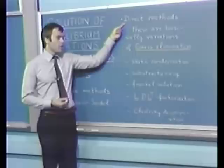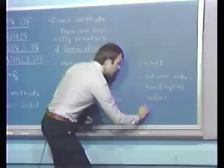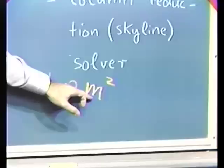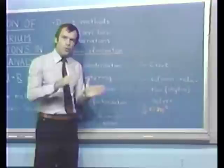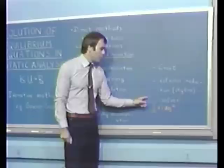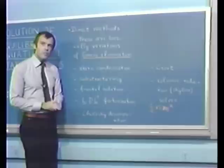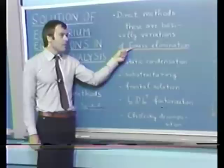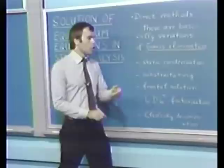The number of operations for a system with n equations and a half-bandwidth m is ½nm², where we use a half-bandwidth m that is constant for the system. If the bandwidth varies, some adjustments have to be made using a mean value. The important point is that we can actually count the number of operations to obtain the solution, which was not the case in the iterative method. In this lecture, I will briefly review how the basic Gauss elimination is performed, show how it is the basis of static condensation and substructuring, and consider the column reduction skyline solver used in the ADINA program.